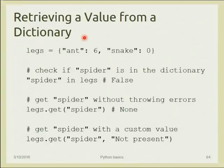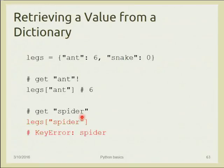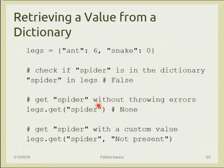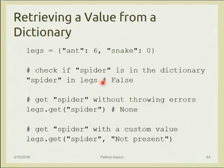To check if a key is in a dictionary without getting an error, use the 'in' keyword — the same keyword used in the for loop, but here it returns a boolean. If the key is included in the dictionary it gives True, otherwise False. For example, 'spider in legs' returns False if spider is not in the dictionary.